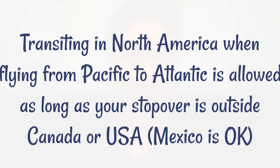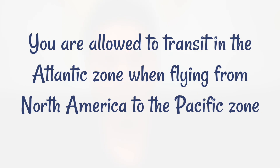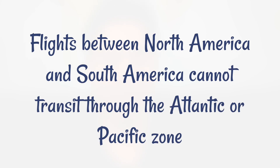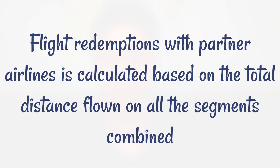For example, if you want to fly from the Pacific to the Atlantic zone, you are allowed to transit through North America and even have a stopover there, as long as your stopover is not in Canada or the US. If you're flying from North America to the Atlantic zone, you cannot transit through the Pacific zone. If flying from North America to the Pacific zone, you are allowed to transit through the Atlantic zone. North America to South America flights must stay between those two zones and cannot transit through the Atlantic or Pacific. For partner airline redemptions, you need to add flights segment by segment to calculate the required points.